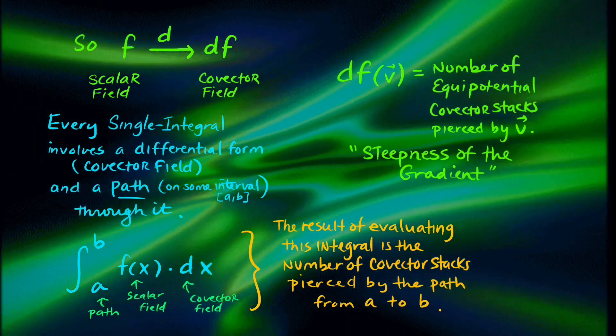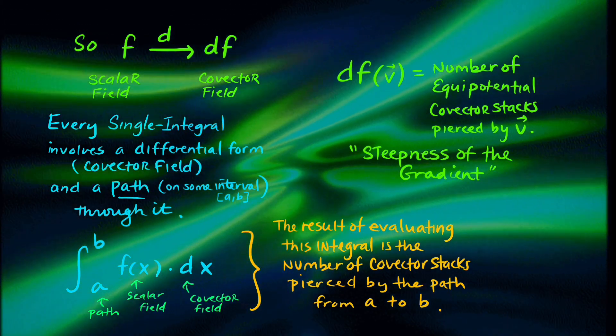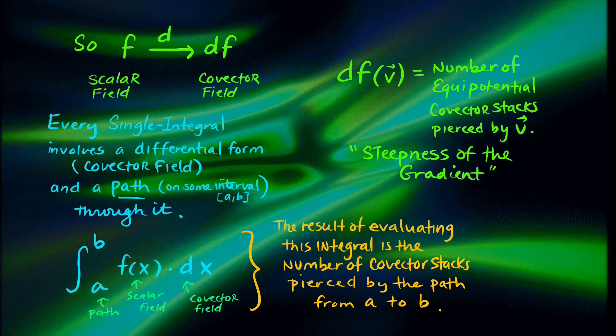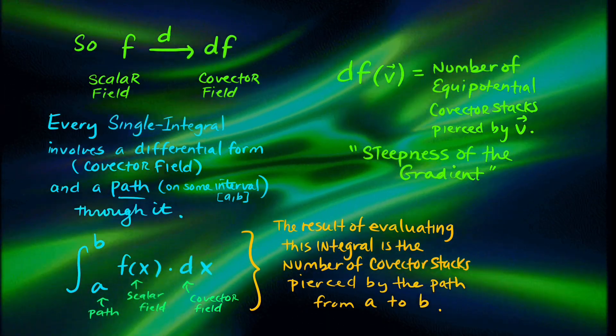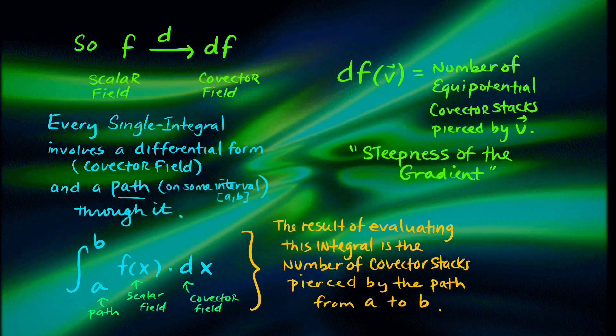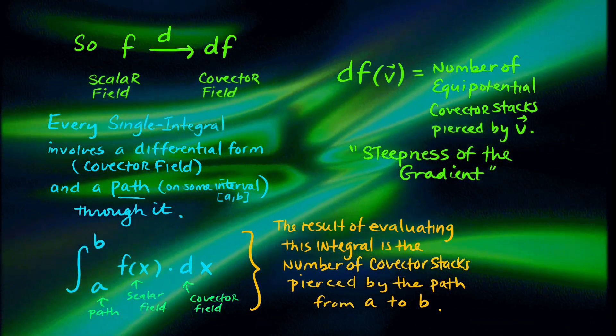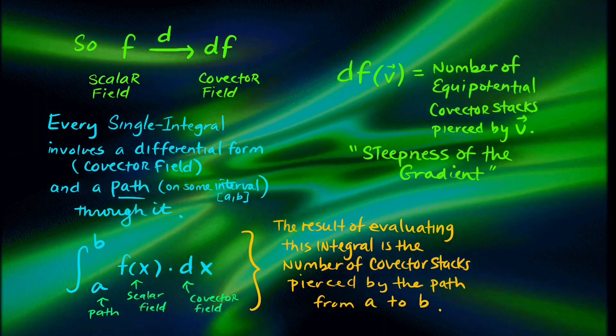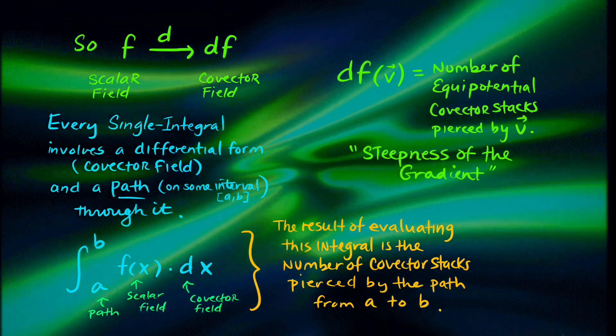When we think about doing an integral, the key components to that integral are the path and the covector field used to measure the vectors going through that path. Evaluating an integral counts the number of vector stacks pierced by the path from a to b.